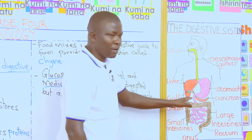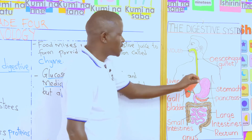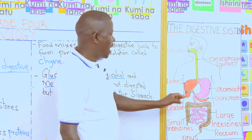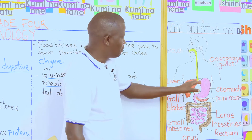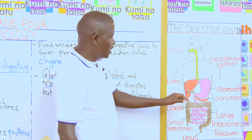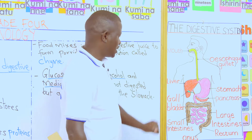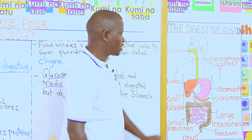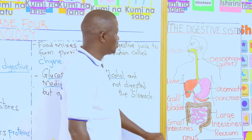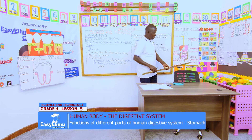On the wall of the stomach, it produces gastric juice. The gastric juice digests the food that has come down through the esophagus. Inside the stomach also, we have hydrochloric acid, and the work of the hydrochloric acid is to kill any germ that could have come down with the food from the mouth through the esophagus.